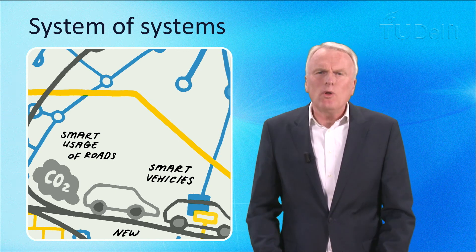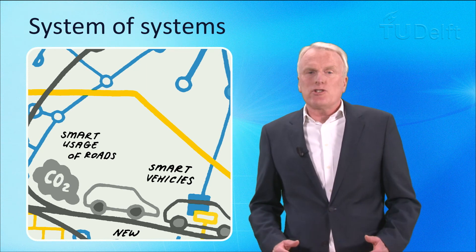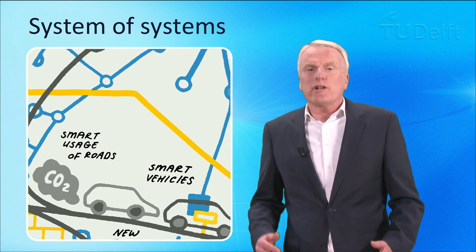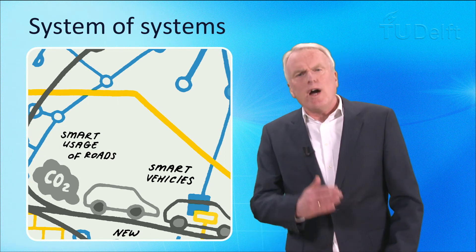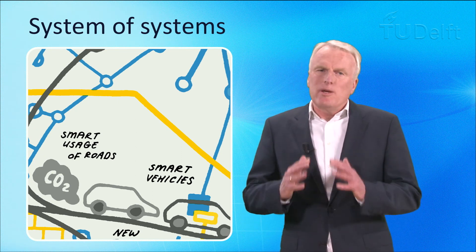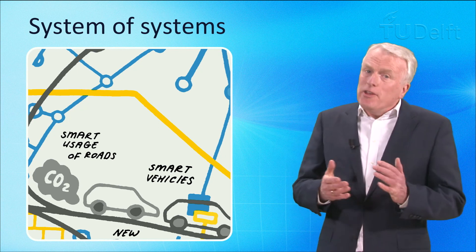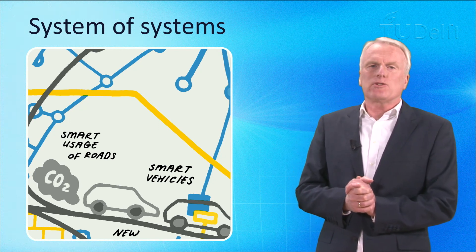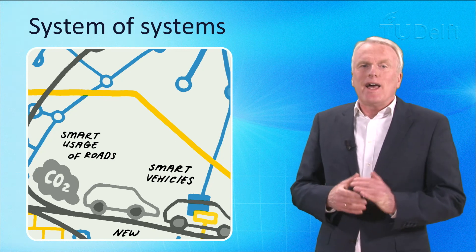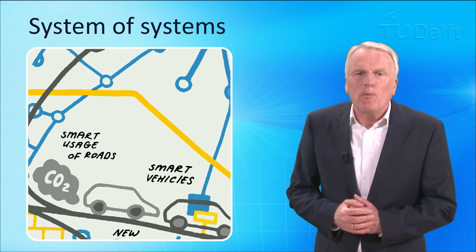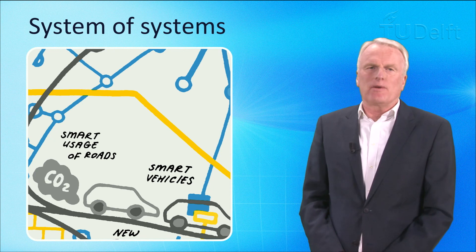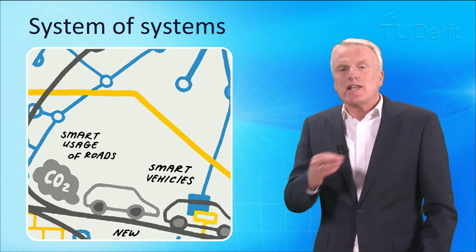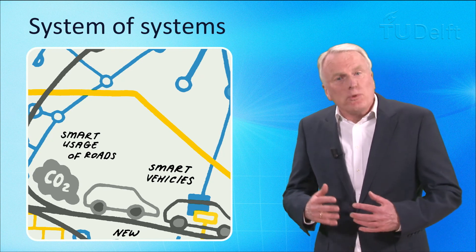For example, energy is an infrasystem that is essential for the proper functioning of other infrasystems. Without energy transport is impossible. The internet has also become indispensable for many systems. And of course, energy and the internet are mutually dependent on each other. There can be no internet without energy, of course, but the opposite is also true.